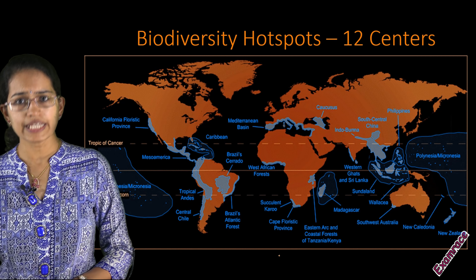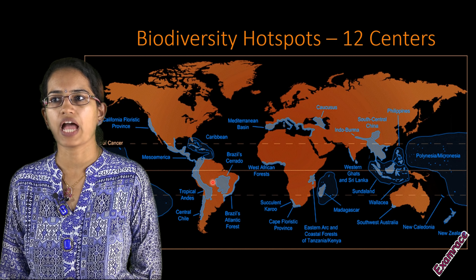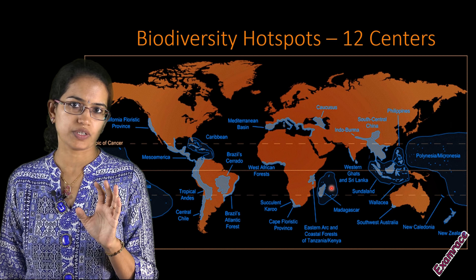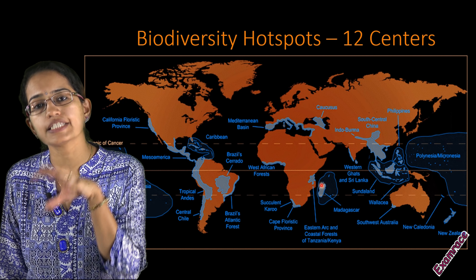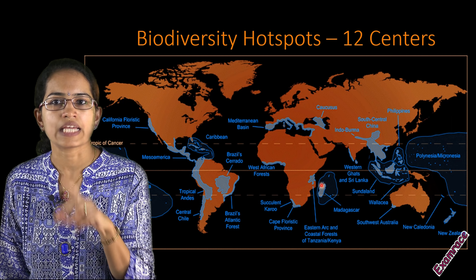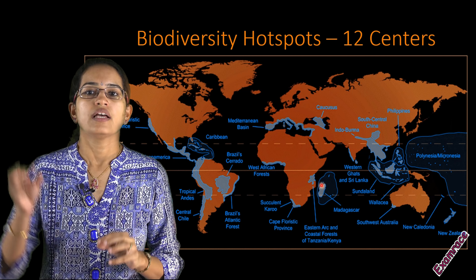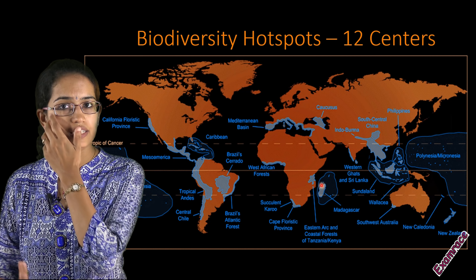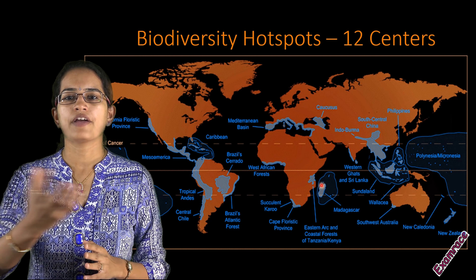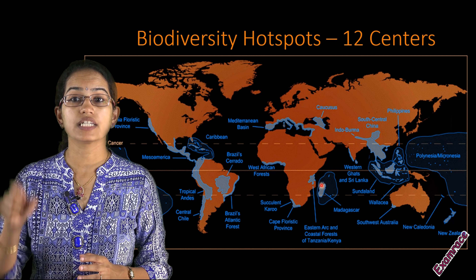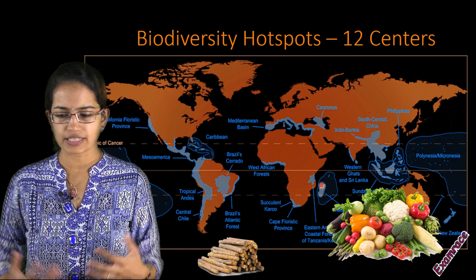Other important biosphere reserves in India include Panna, Seshachalam, and Agasthyamalai. Next are biodiversity hotspots — we have identified 12 such hotspot regions across the world. The regions marked in green are the hotspot regions. Madagascar, for example, has the highest endemic species characteristics — 85% of its species are not found anywhere else on the globe. The people there are very poor and most activity is agriculture and slash-and-burn cultivation, also known as shifting cultivation.